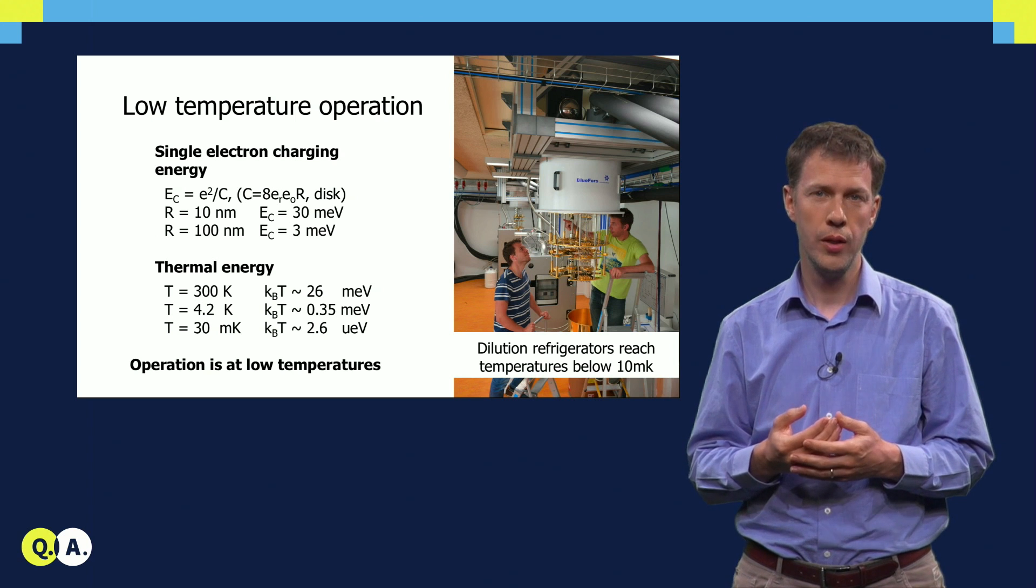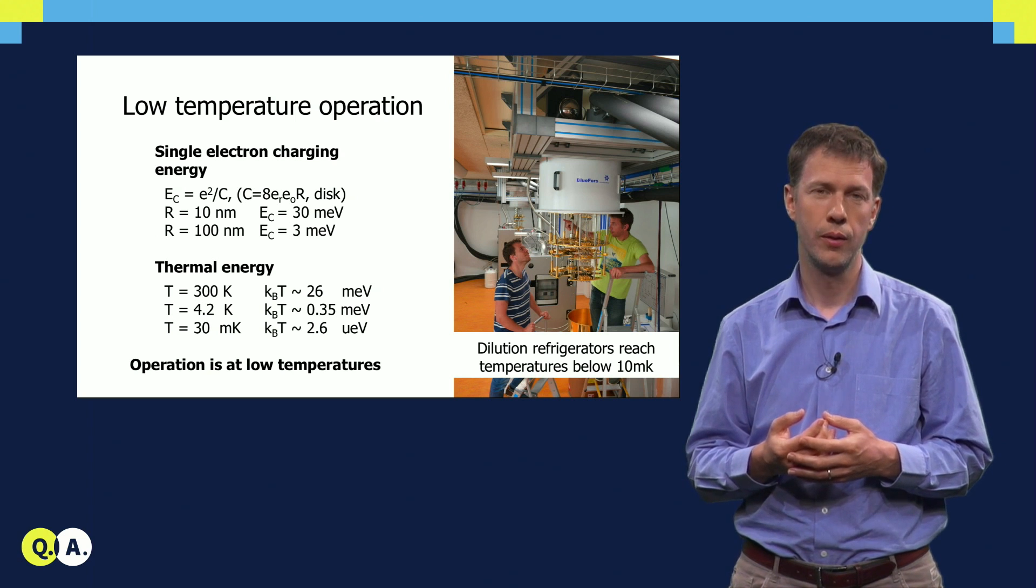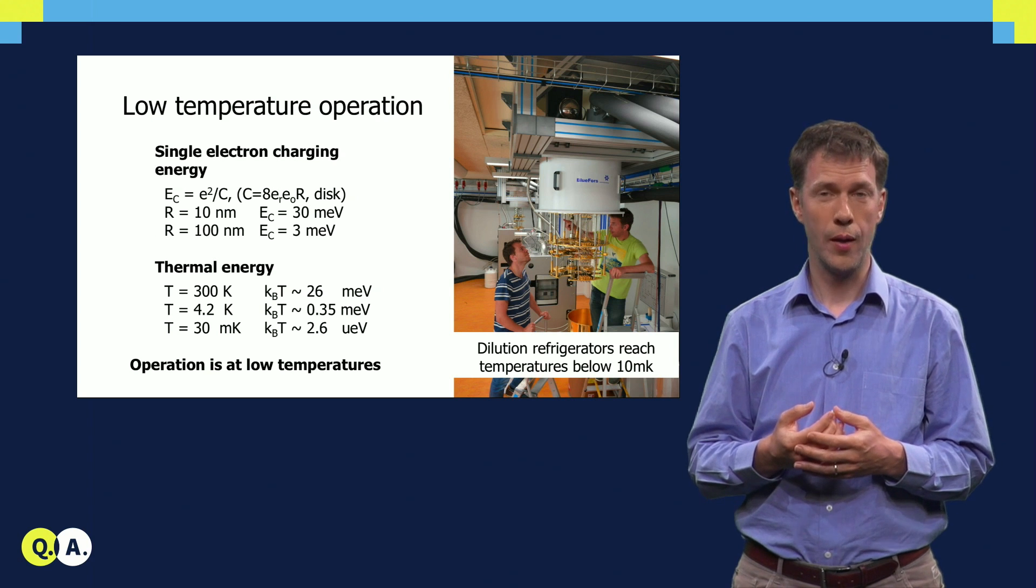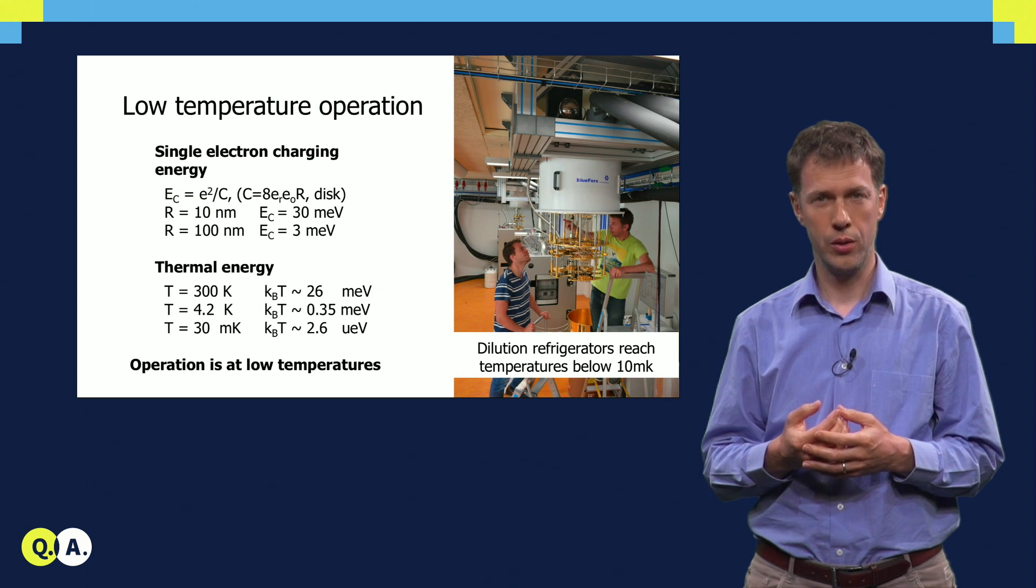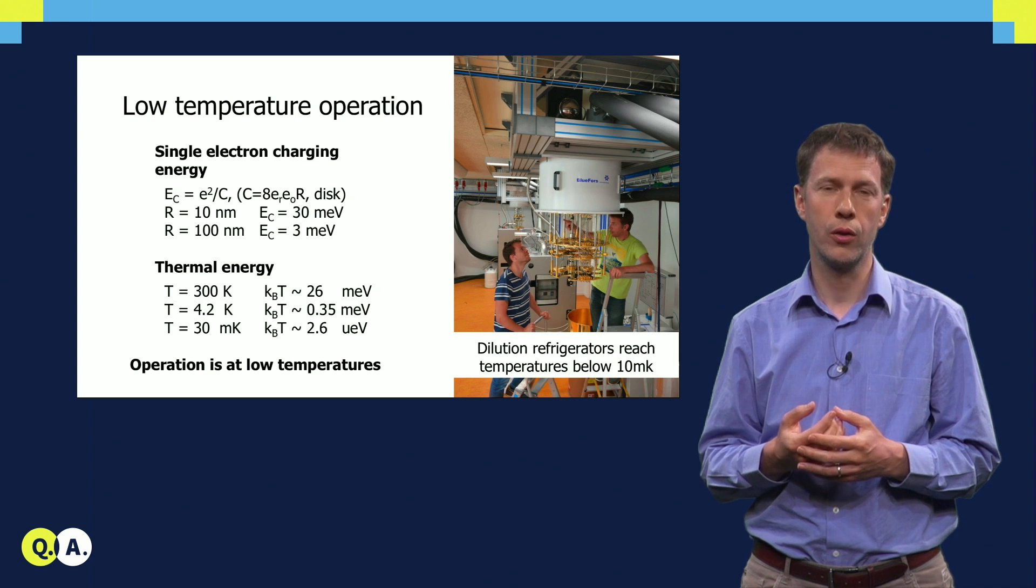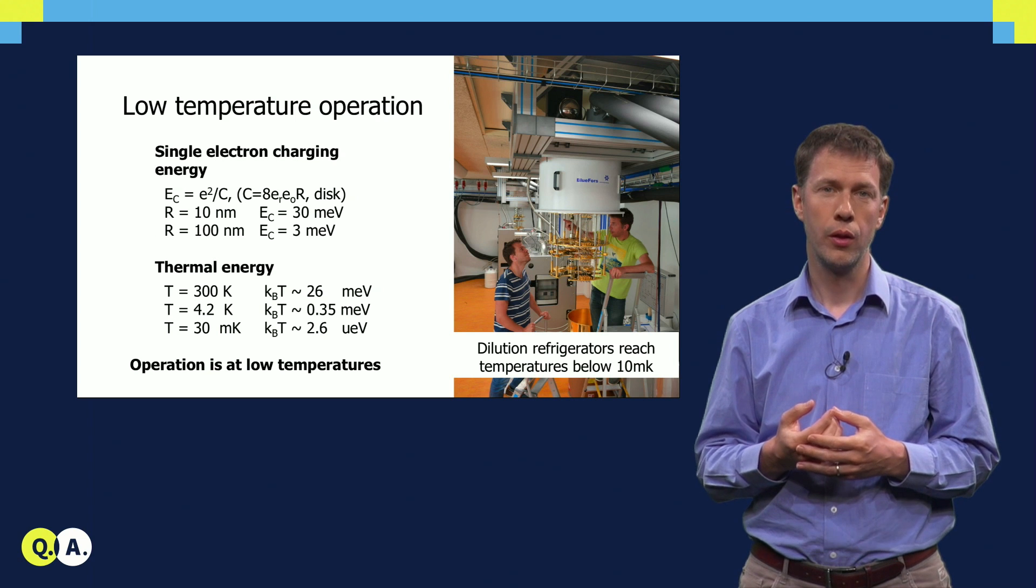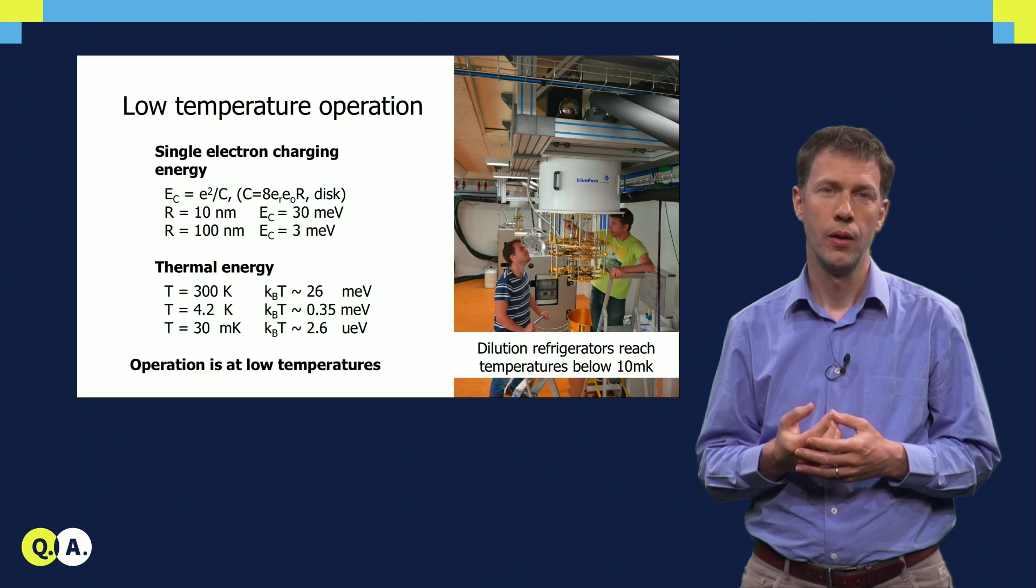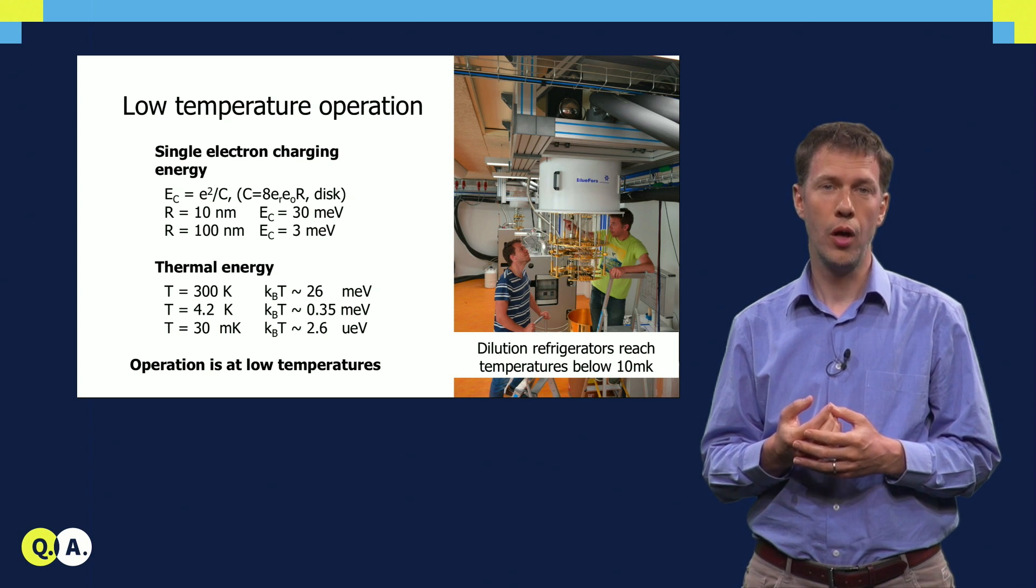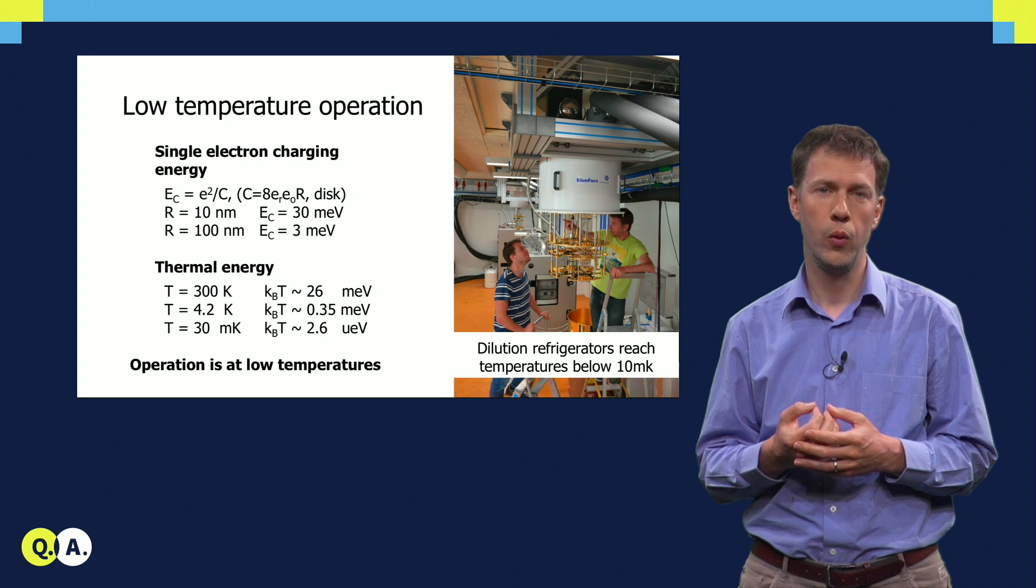If you go to very small capacitances, it turns out that the charging energy, the energy required to add one single electron charge, can be larger than the thermal energy. To give some examples, for a small island with a radius of 100 nm, the charging energy is 3 meV. The thermal energy at 4 Kelvin is 10 times less than this. So at 4 Kelvin, it is actually possible to control the number of charges on these islands one by one.